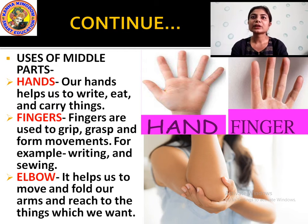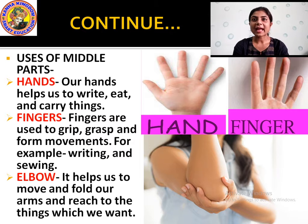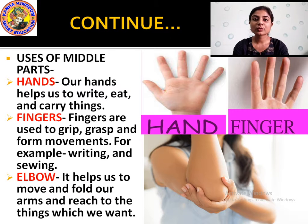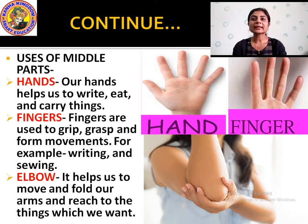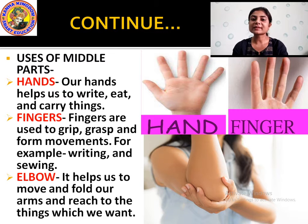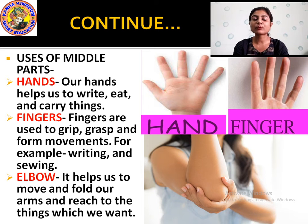Now let us study the uses of the middle body parts. Our hands help us to write, eat, and carry things. Then fingers — fingers are used to grip and hold things tightly, and for fine movements. For example, when we write, we hold our pencil with our fingers.